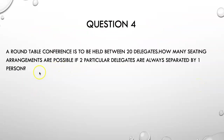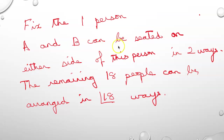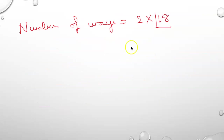Question 4: A round table conference is to be held between 20 delegates. How many seating arrangements are possible if two particular delegates A and B are always separated by exactly one person? We fix the one person in between. A and B can be seated on either side of this person in 2 ways, and the remaining 18 people including this one person can be arranged in 18 factorial ways. So the total number of ways is 2 into 18 factorial.